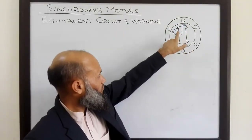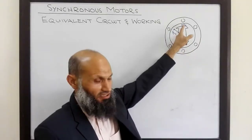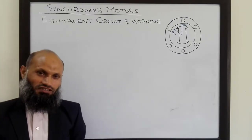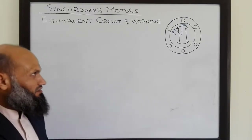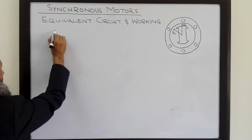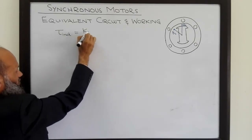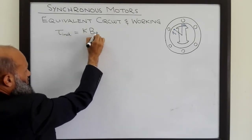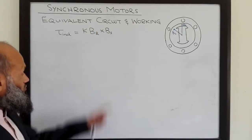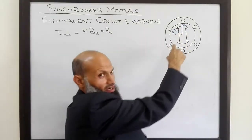So there are two magnetic fields: one due to currents in the stator coils, and another magnetic field due to the electromagnet on the rotor. The interaction of these two magnetic fields induces a torque, and that torque tends to rotate the rotor. The induced torque — we have already derived the expression for it — is given by K BR cross BS. So the induced torque will tend to align both magnetic fields.